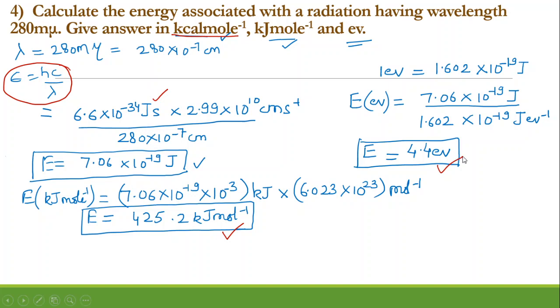Normally, these three units — kilocalorie per mole, kilojoule per mole, and electron volt — are the only ones asked. As a quick revision: using the equation E equals hc by lambda, they may ask you to calculate lambda, E, or nu (frequency). Ultimately, you have to use this equation only, and in the very first example I showed you how to convert from one unit to another. I think it will now be easier for you to attempt these questions. Do let me know in the comment section if you want any improvement or any specific topic covered. Thank you for listening, keep liking and subscribing.